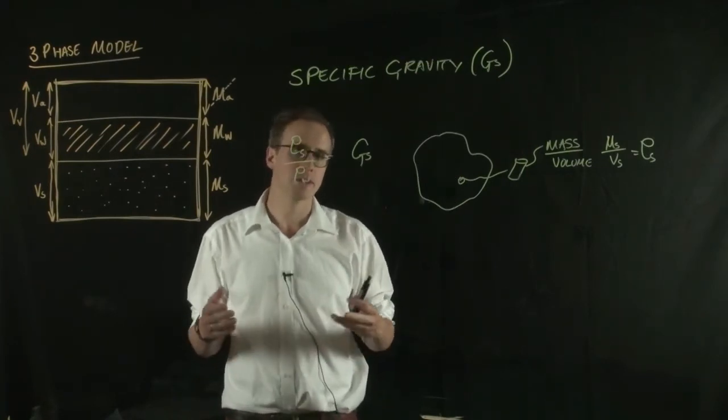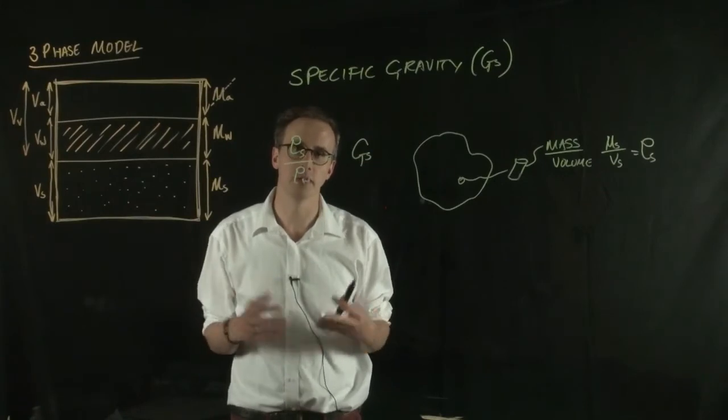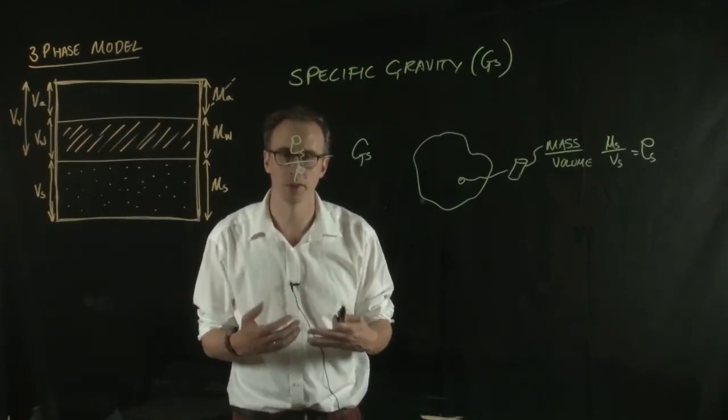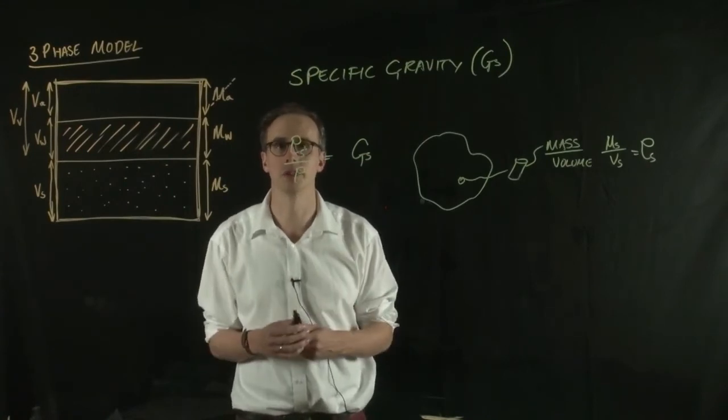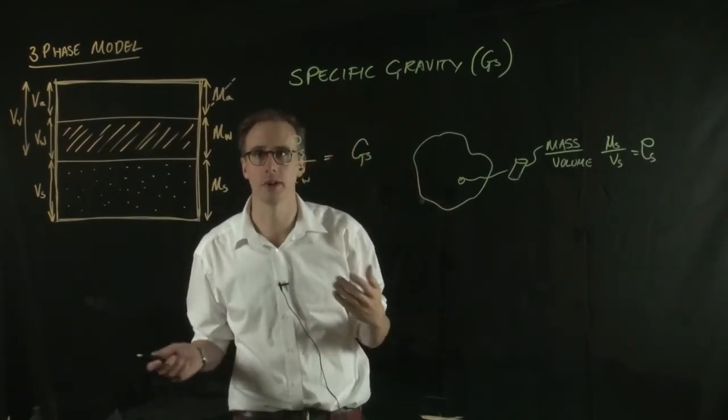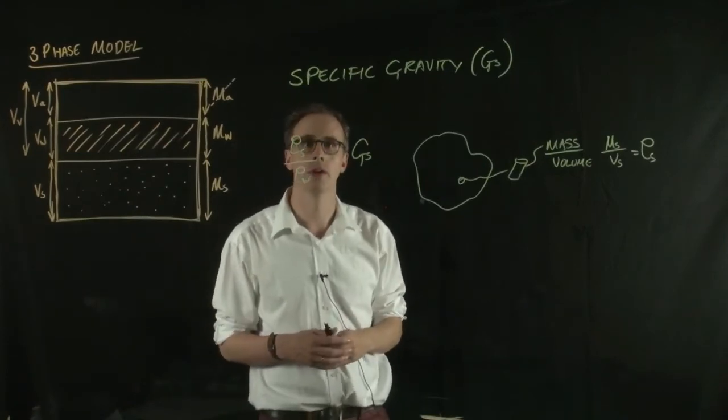You can see that soils are made up of a range of different materials. They'll express a specific gravity that's an average of its constituent parts. Soils tend to have specific gravity somewhere around 2.5 to 3.